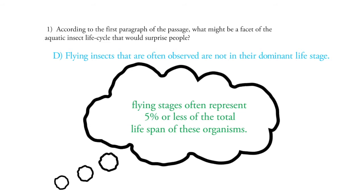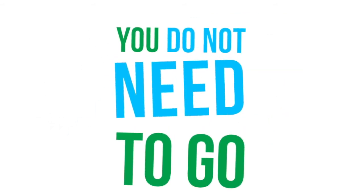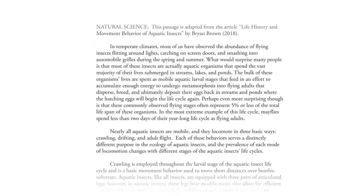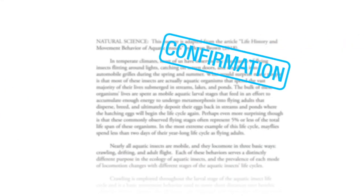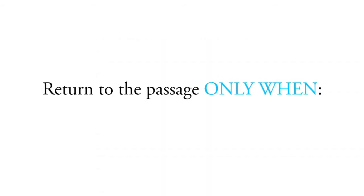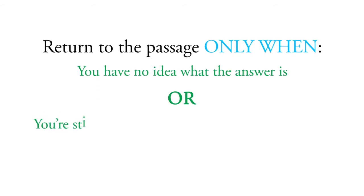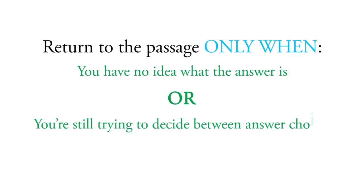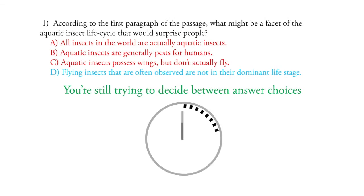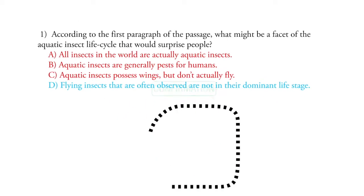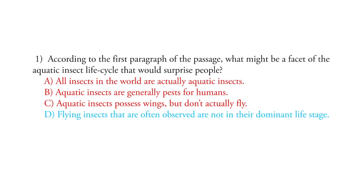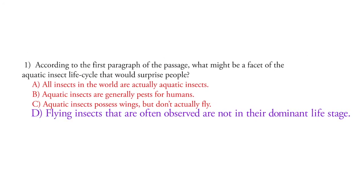Even if a memory is not triggered, you do not need to go back to the passage. I know how tempting it is to return to the passage for confirmation, but you really want to return to the passage only when you have no idea what the answer is or you're still trying to decide between answer choices. In this case, the time it would take to return to the passage to confirm can be better spent answering other questions. So you pick D and you move on.